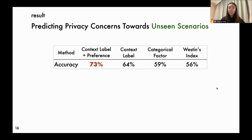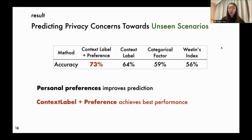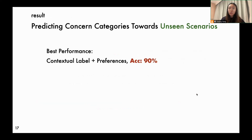Overall, context labels have more promising predictive effects on participants' privacy attitudes towards unseen data practices. When combined with individual privacy preferences, the performance can be improved. Among all models tested, the combination of personal preferences and our proposed contextual labels can achieve the best performance with 73% accuracy. We used similar methods to predict whether users have specific privacy concern categories towards specific contexts.